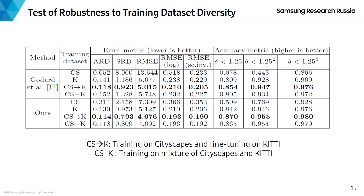To verify the efficiency of our contributions in achieving robustness to training dataset diversity, we performed an additional set of experiments. We trained our model separately on KITTI and Cityscapes datasets, and then fine-tuned on KITTI the model pre-trained on Cityscapes. The results were compared to our baseline model trained on the same datasets.